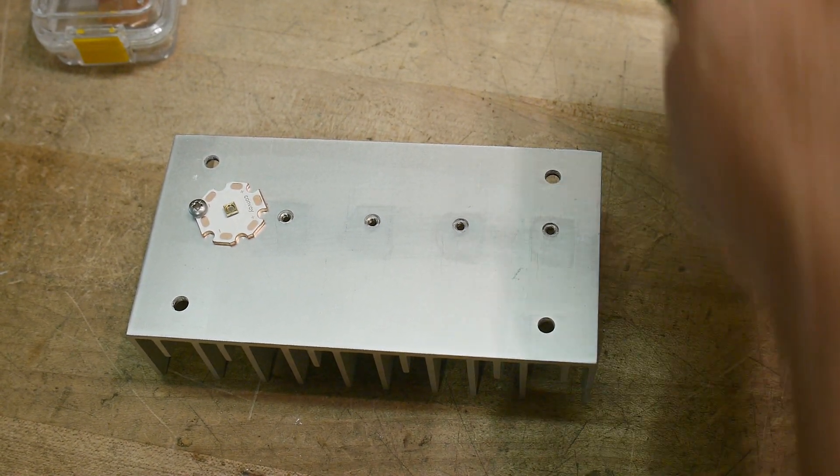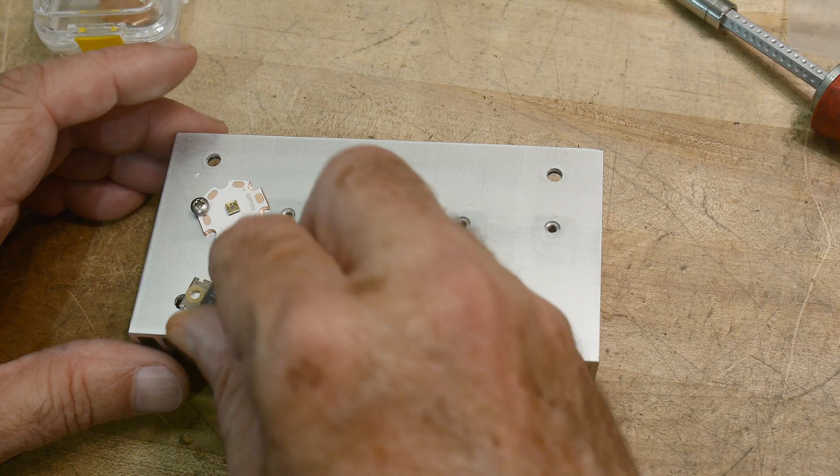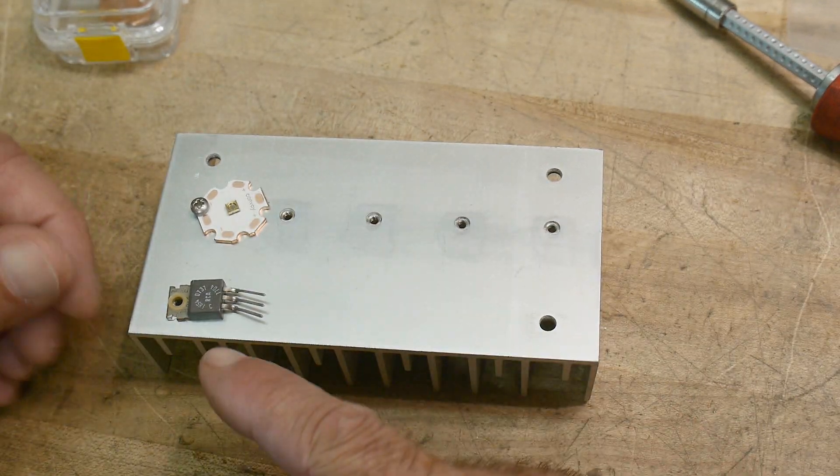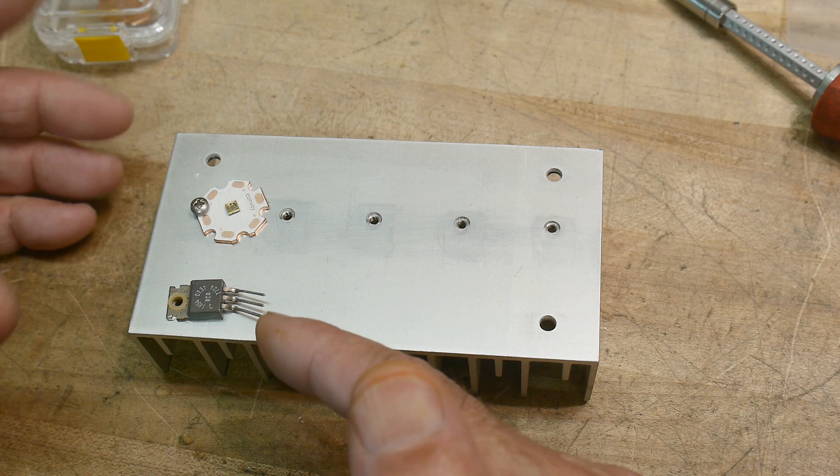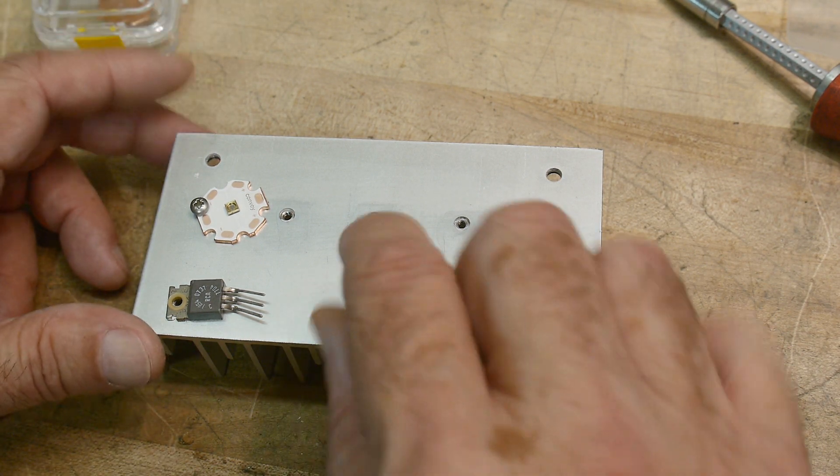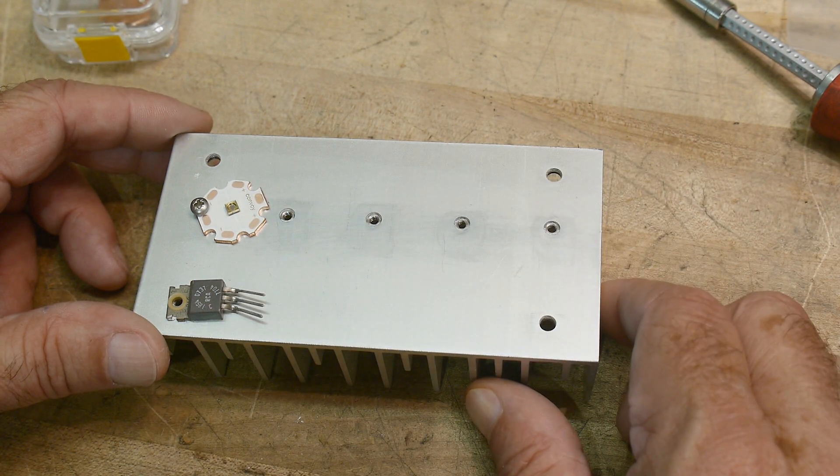So that would look something like this. I could put like an LM317 here to regulate 300 milliamps, and then maybe a little PC board with jumpers so I can turn on which one I want.